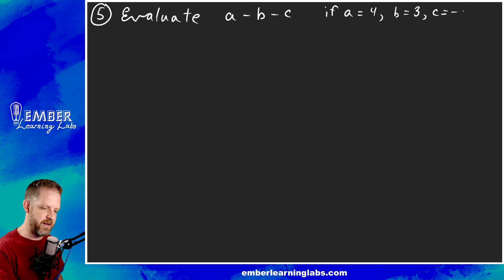So the instructions here are: evaluate a minus b minus c if a equals 4, b equals 3, and c equals negative 10. So how do we do these? We take them and we put parentheses everywhere where there's a variable.